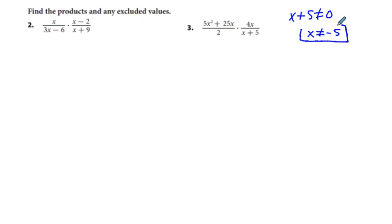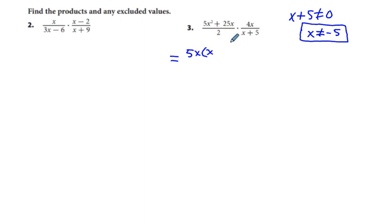I'm going to get the excluded values first, and now let's factor this numerator: 5x squared plus 25x. Our common factor is going to be 5x. So 5x times x equals 5x squared, and 5x times 5 equals 25x, giving us 5x times quantity x plus 5. And then we write that over 2, times 4x over x plus 5.